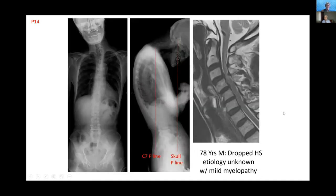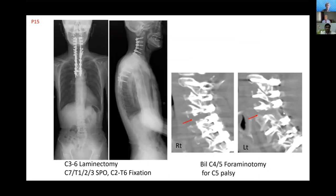This is a case of a 78-year-old male with dropped head syndrome of unknown cause. I performed C6–C7 laminectomy and Smith-Petersen osteotomy at three levels with C2–T6 fixation. Postoperatively this patient developed C5 palsy, so I performed additional decompression, and he had complete recovery. You can see the global spinal balance improved very well.